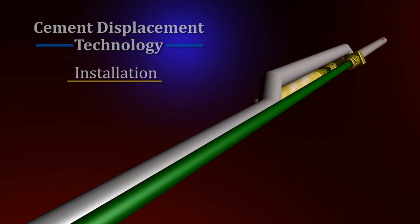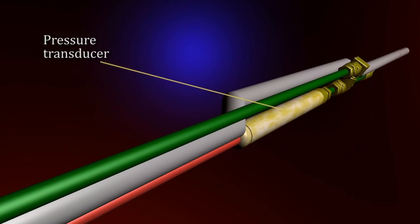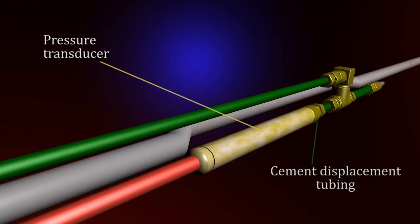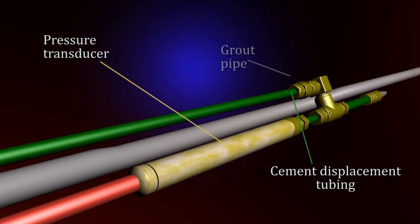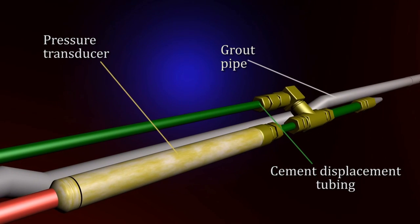The installation process is as follows. Pressure transducers, their cables and cement displacement tubing are attached to a permanent steel or fiberglass grout pipe.